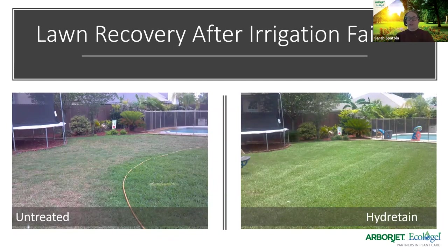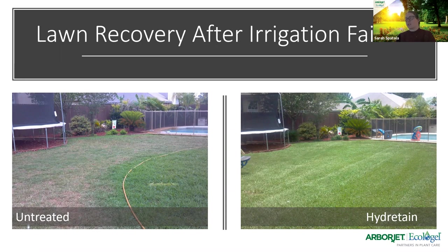What often happens with residential or commercial properties — irrigation systems fail. Hydrotain is a product that helps provide insurance. It's great to have as part of your maintenance program, but it can also serve as a recovery product. In this situation out of Jacksonville, Florida, the landscape contractor was sure the client was going to cancel after an irrigation system failure. They put down a Hydrotain application, got the homeowner to do a little hand watering, and were able to recover that area and maintain the business. They did not lose that customer because of the Hydrotain application.